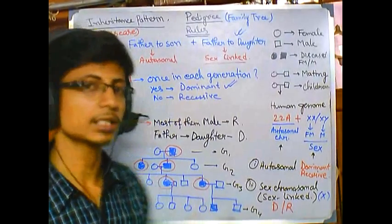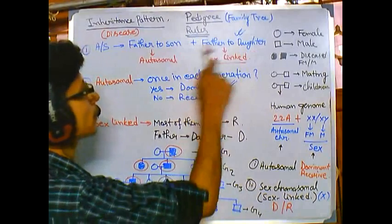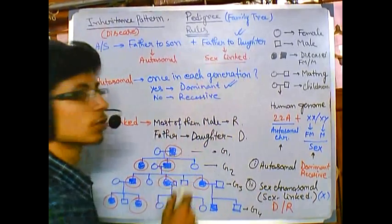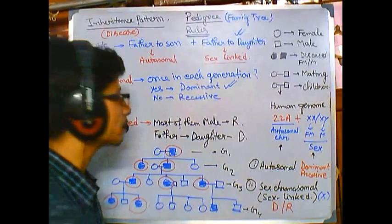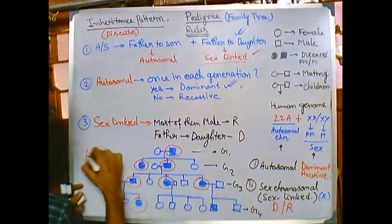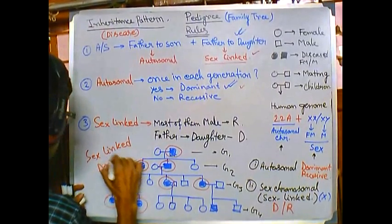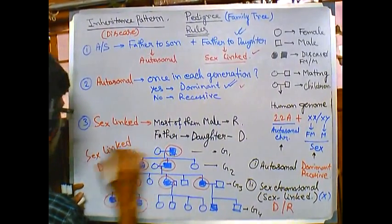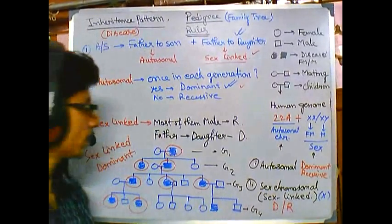So that means it is of dominant type. So it is sex linked. We got it from the transfer of father to daughter, and it is also dominant because it is showing up itself in all the generations. So that means it is sex linked dominant type of transfer or type of pattern of inheritance.